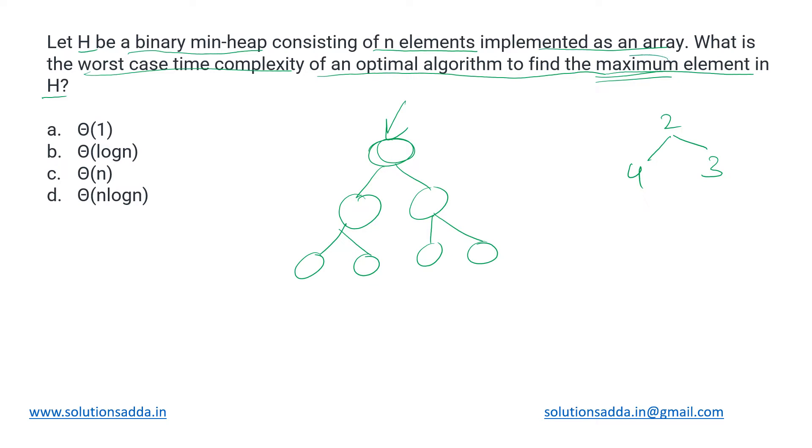So if in this min-heap we have to find a maximum element, then where would it be present? In one of the leaf nodes. These are the leaf nodes, and in any one of the leaf nodes that maximum element can be present. It is not necessary that the leaves are in sorted order. It can be anyhow.